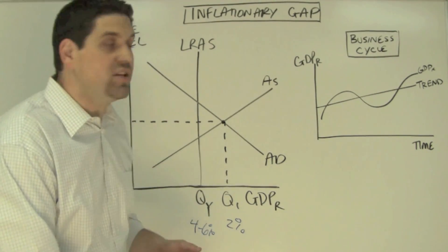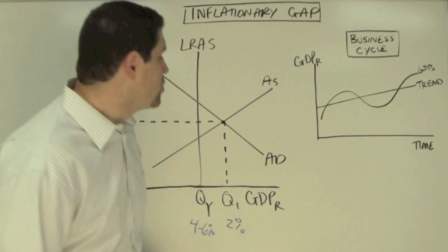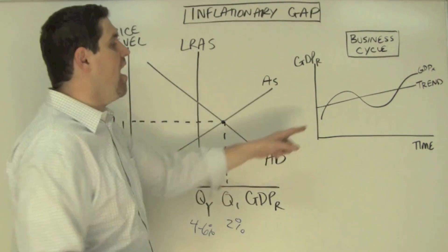Now to better explain that concept, let's try to show you what I'm talking about on the business cycle. Over time, the economy goes up and the economy goes down. So where is an inflationary gap on that graph?